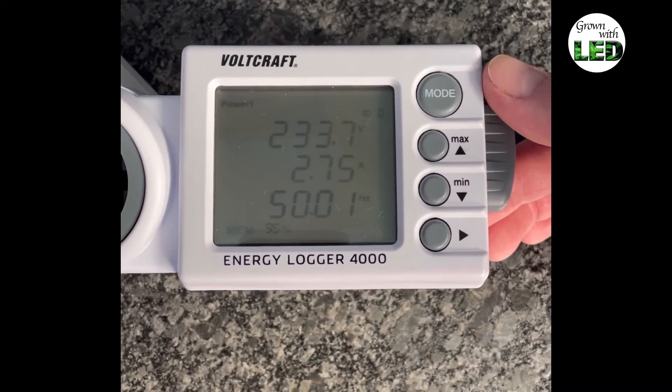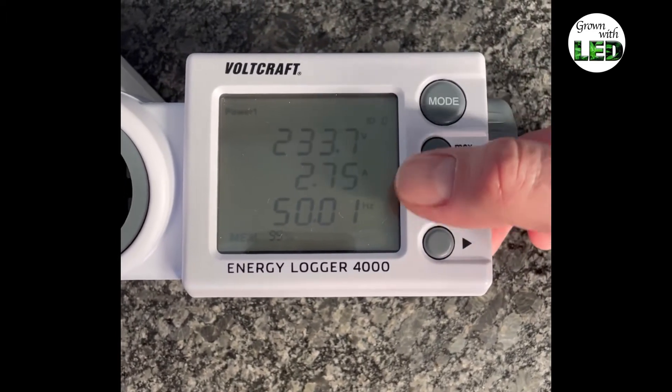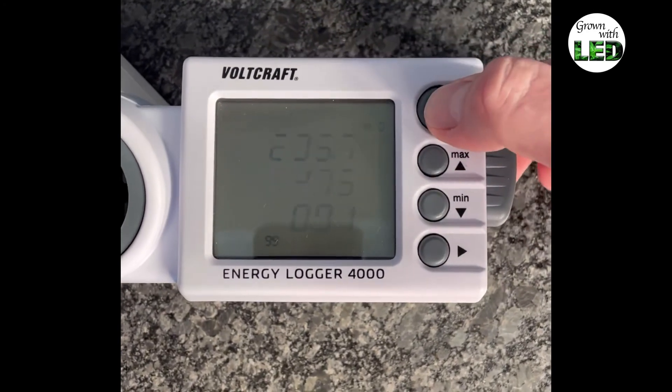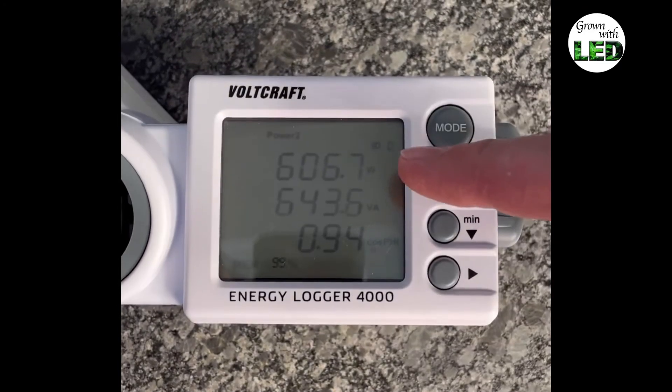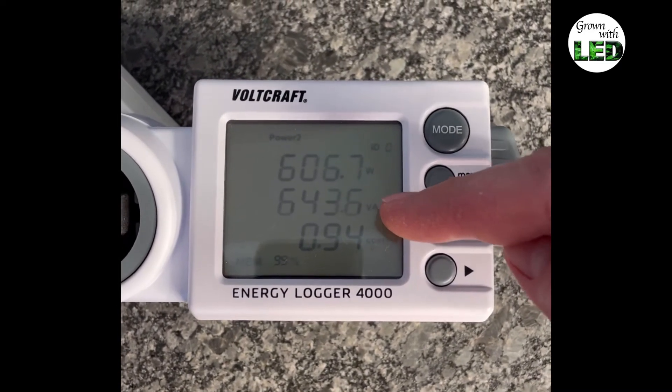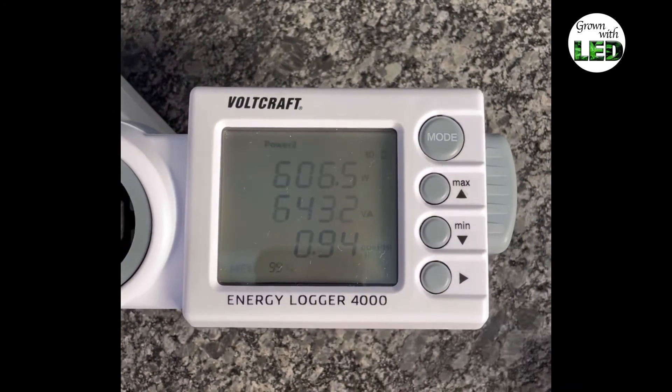We do it with our Waltzcraft Energy Logo 4000. You can see at 233 volts she draws a current of 2.75 amps and she uses an actual power of 606.7 watts that's 643.6 VA volt ampere at a power factor of 0.94.